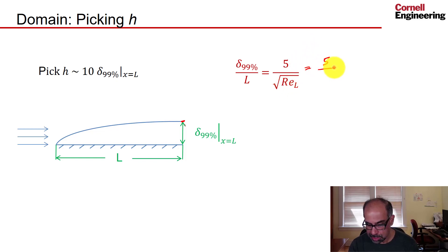So if our Reynolds number is 10,000, I'll get 5 over root of 10,000, which is 0.05. And if I bring L to the right-hand side, L is just 1 meter, so this thickness is 0.05 meters, which means h is 10 times 0.05 meters, which is 0.5 meters.